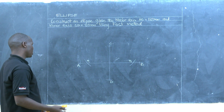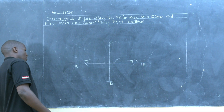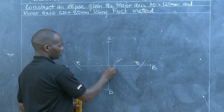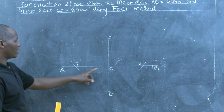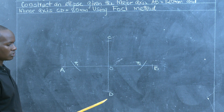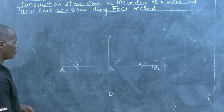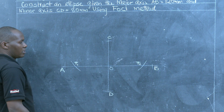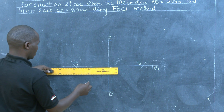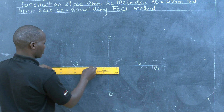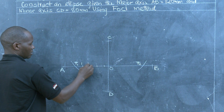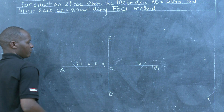Once we have those two focus points, we need to establish a number of other points from F1 — you can also call this point O. For ease of following along, we will establish points at a distance of 5 mm from F1, giving us points 1, 2, 3, and 4.